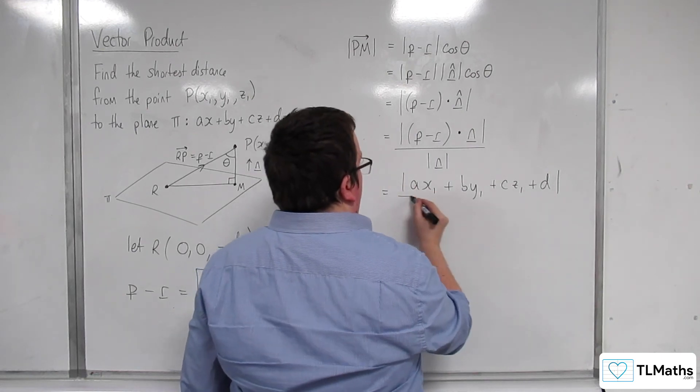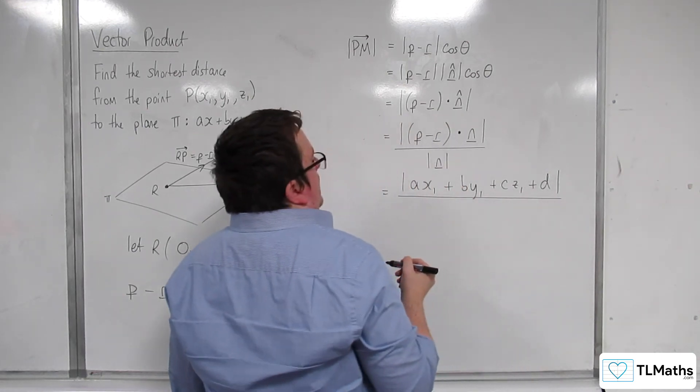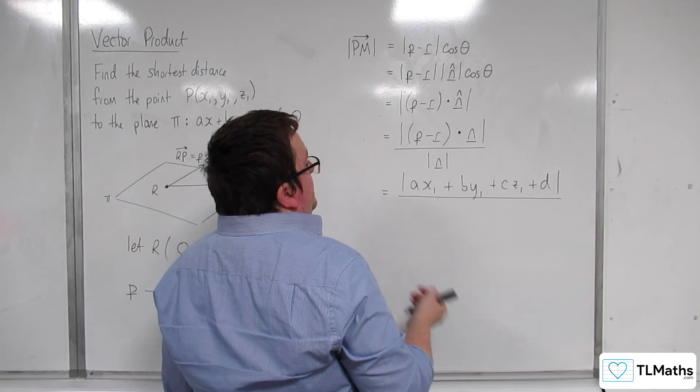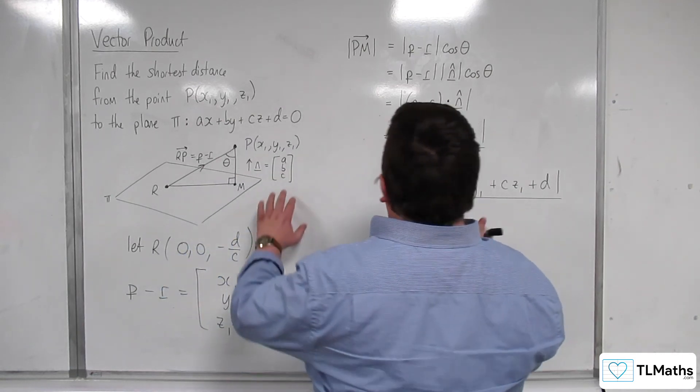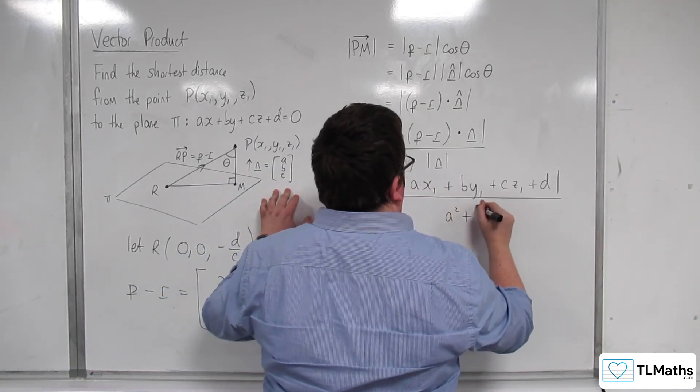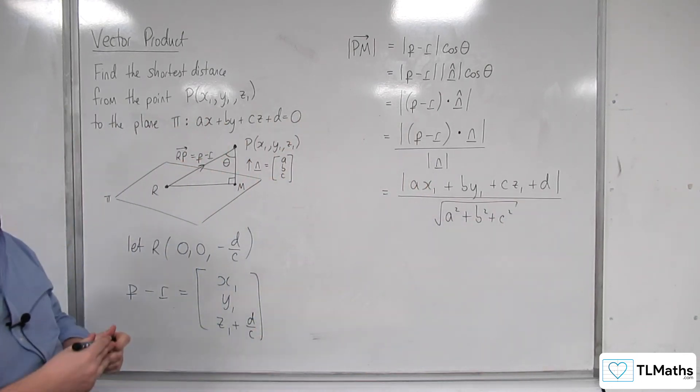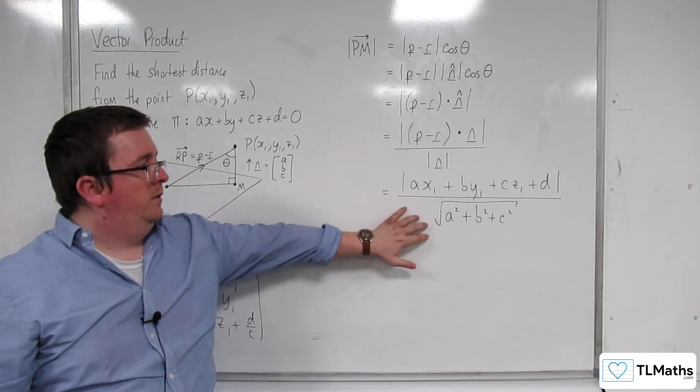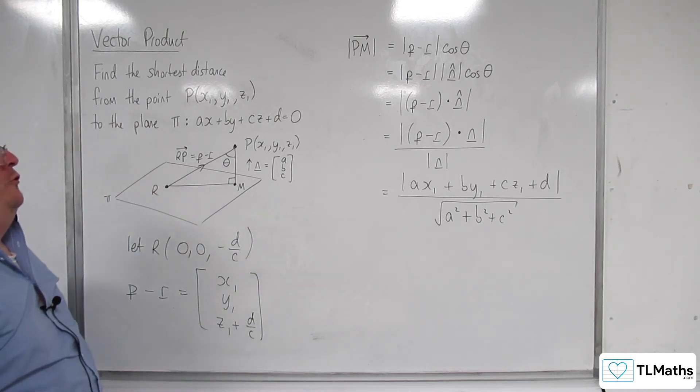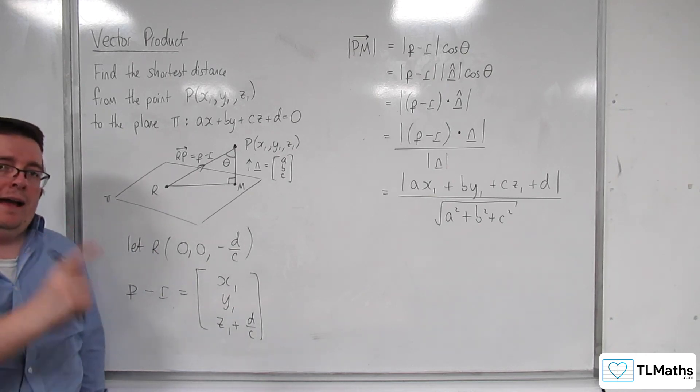So we've got the length of that, or the magnitude of that, divided by the length of N, which is A squared plus B squared plus C squared, square root. And so that is the formula for the shortest distance between a point and a plane.